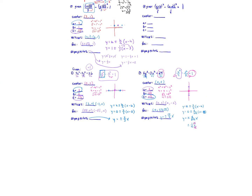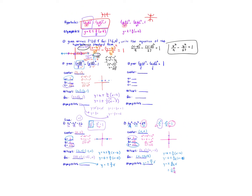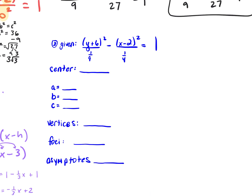Any questions from this page? All right, let's go back to number 3. Start off at the center, which would be 2, negative 6. Remember the h always goes with x — that's my x value, my y value — but we'll flip the signs, so 2, negative 6.